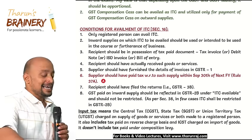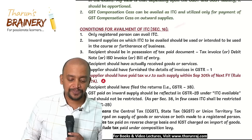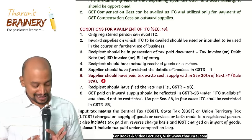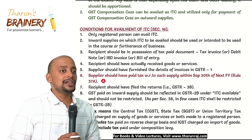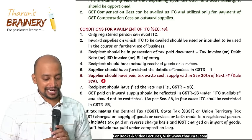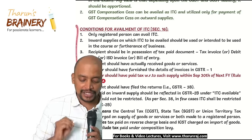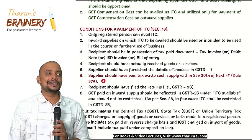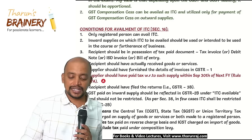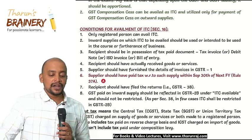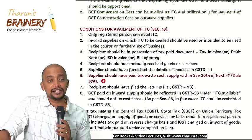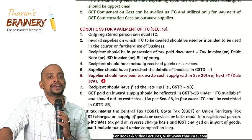Section 16 covers conditions for availment of ITC. There are eight conditions. Condition 1: Only a registered person can avail ITC; an unregistered person cannot. Condition 2: The inward supplies on which ITC is to be availed should be used or intended to be used in the course or furtherance of business. 'Intended to be used' means even if you purchase a machine and do not use it yet, you can still take ITC - usage is not a criteria.